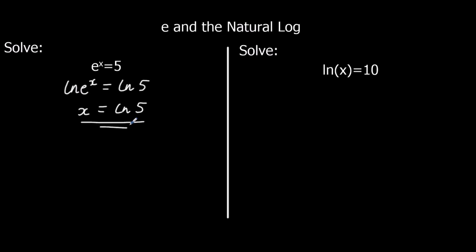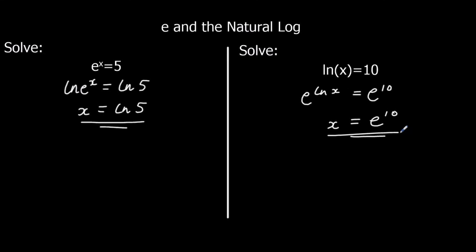The other example: we've got ln x = 10. We get rid of ln by applying e to both sides, so e^(ln x) = e^10. e and ln cancel out, which leaves us with x = e^10. So we use the fact that e and ln are the inverse of each other to solve equations.